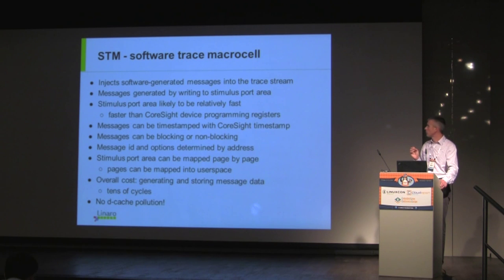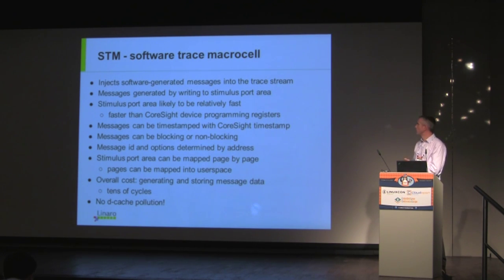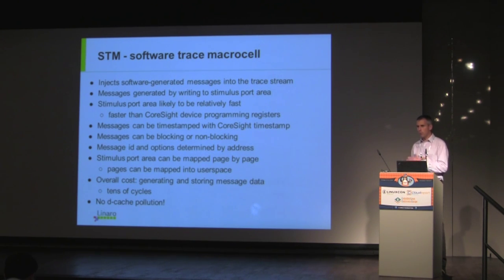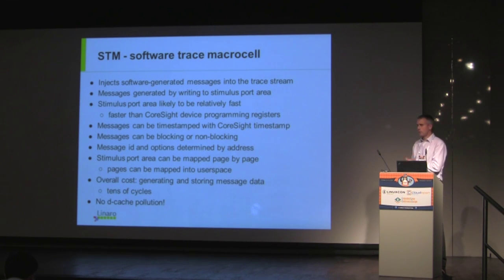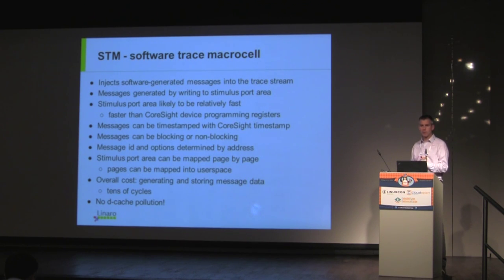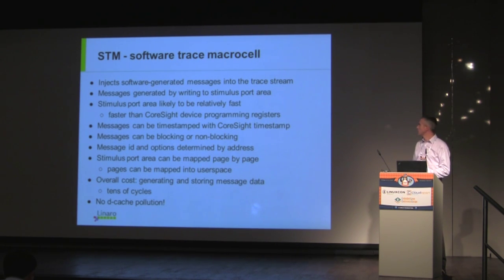STM is the other useful component that hooks up to the CoreSight trace hub system. This is a memory-mapped trace generator — you can write messages to it. The message generation area is a big block of memory, separate from the normal memory-mapped peripheral programming area. You can map it into different address spaces a page at a time, so each address space gets its own page of STM stimulus window. It can generate instrumentation messages in a very low-overhead way. You get a timestamp for free, and you don't have any effect on your cache — so compared to reading the system timer and writing into a ring buffer, it's actually less invasive.